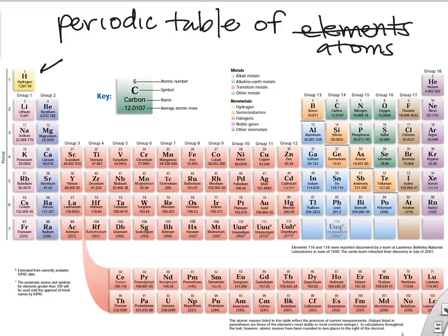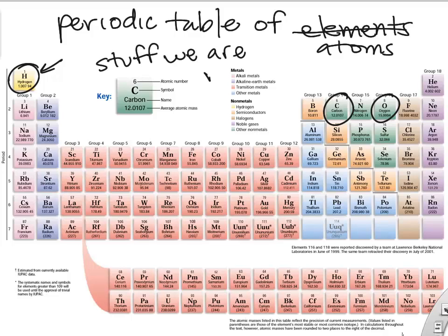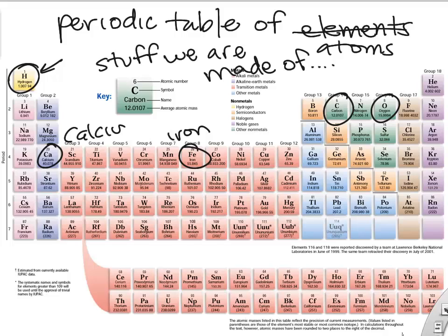Looking at the periodic table of elements, you can see all the different varieties of atoms found in nature. Some things we find in our body like calcium, iron, carbon, and oxygen, and some things we don't want in the body, like atoms of lead.